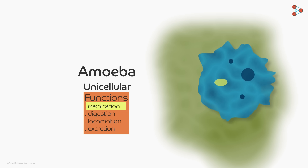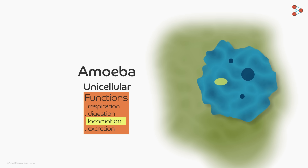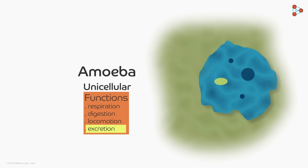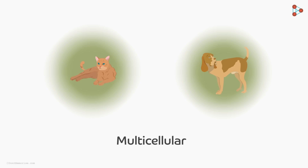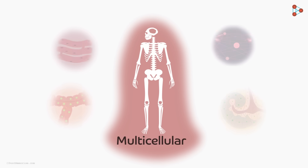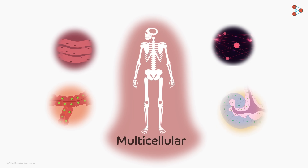Be it respiration, digestion, locomotion, and excretion. What about a cat or a dog? Do they have a single cell? Of course they don't! They have many cells which make up their entire body.